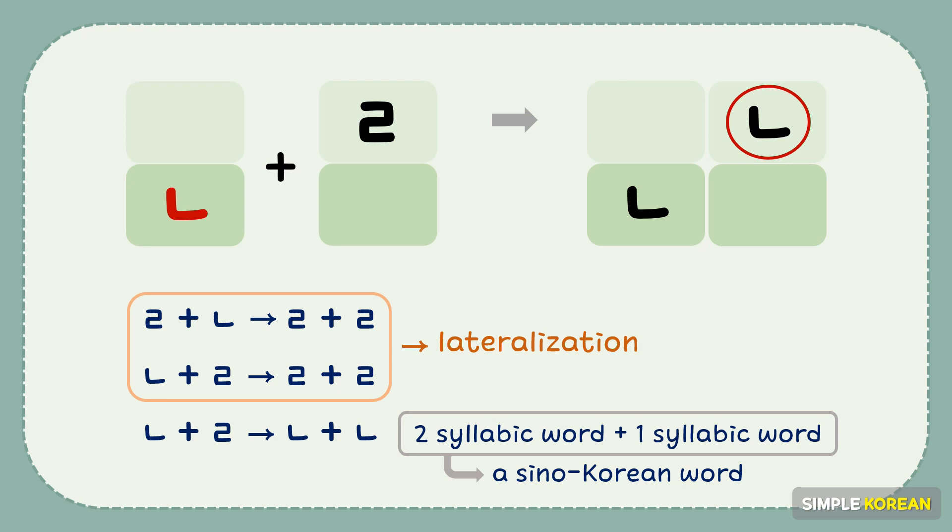However, when ㄹ and ㄴ appears in a Sino-Korean word, combining two syllabic word and a syllabic word, the ㄹ and ㄴ becomes ㄹ and ㄹ.